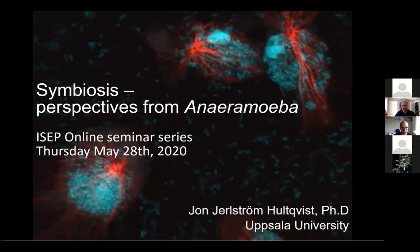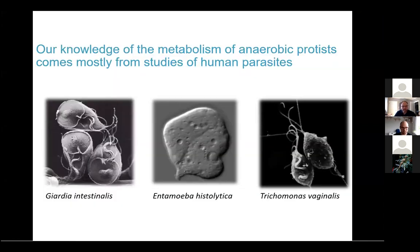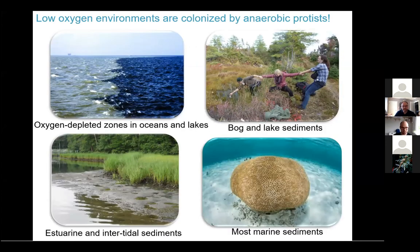Most of our knowledge about anaerobic protists is based on studies mainly from human parasites, such as Giardia, Entamoeba, and Trichomonas. Many of these have significantly reduced metabolic capacity, which limits our knowledge about real life systems. Many parasites are not representative of what you can find in natural environments such as sediments in lakes and oceans.